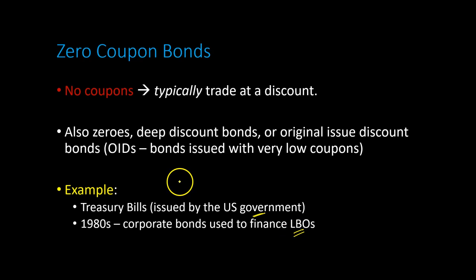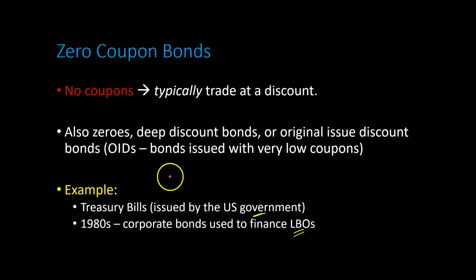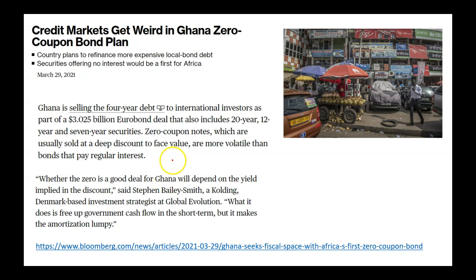The main reason why zero-coupon bonds appeal to borrowers is that they don't have to make any interest payments or coupon payments immediately. All they have to do is make one big lump-sum payment at the end when the bond matures, relieving them from the pressure of making coupon payments every year or every six months. In fact, in early 2021, the government of Ghana was actually considering issuing four-year zero-coupon bonds for exactly that reason.